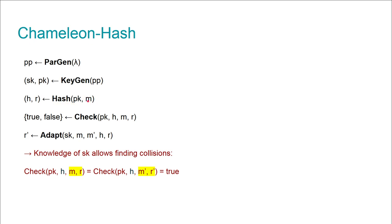The hashing algorithm takes not only a message M but also a public key, and outputs two values: some hash value H and some randomness R. Then we have a checking algorithm which takes as input a public key PK, some hash H, some message M, and some R.